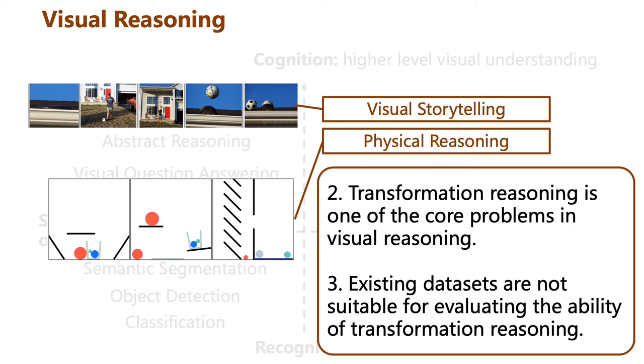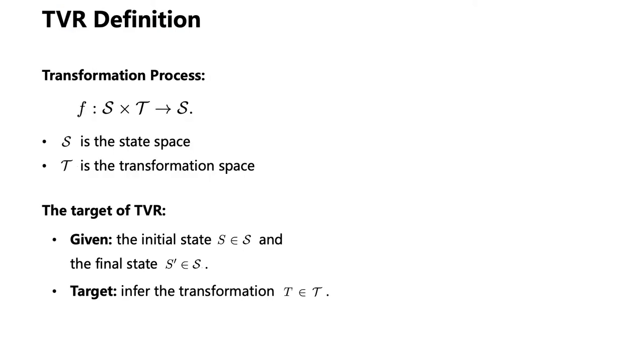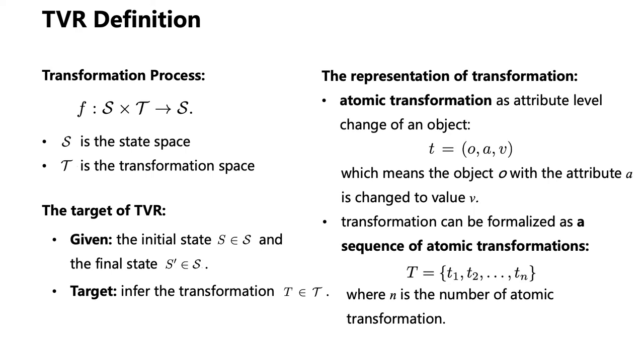Therefore, we define transformation-driven visual reasoning. In this task, given the initial state and the final state, the target is to infer the transformation. And without loss of generality, we define the transformation as a sequence of atomic transformations. And an atomic transformation is set to an attribute-level change on an object.